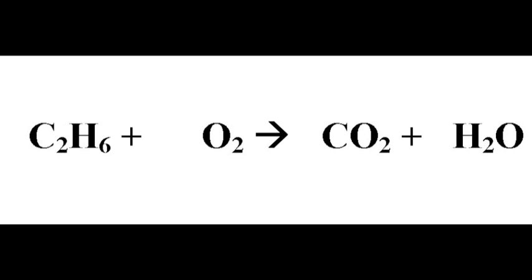The second example is the combustion of ethane. Ethane reacts with oxygen to produce carbon dioxide and water. This procedure is the same but slightly more tricky. Working from left to right, the first atom is carbon — there are two carbon atoms in the ethane molecule, but on the right hand side there's only one carbon atom in carbon dioxide. So we put a two in front of the carbon dioxide, giving us two molecules of carbon dioxide and two carbon atoms on each side. Carbon atoms are now balanced.